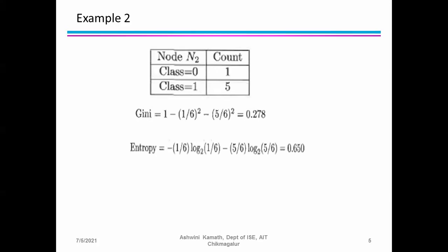For entropy: −(1/6)·log₂(1/6) − (5/6)·log₂(5/6), which gives 0.650. For misclassification error: 1 − max(1/6, 5/6). Since 5/6 is the maximum, the answer is 1 − 5/6 = 0.167. So we get three different answers depending on the formula used.